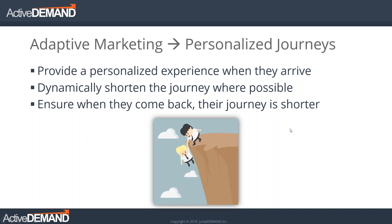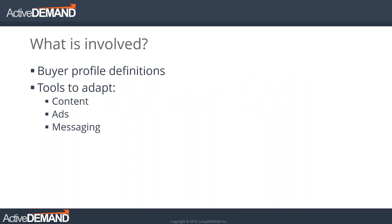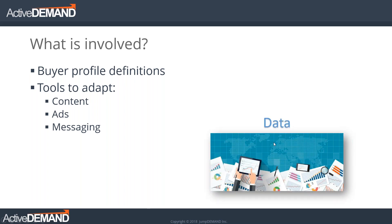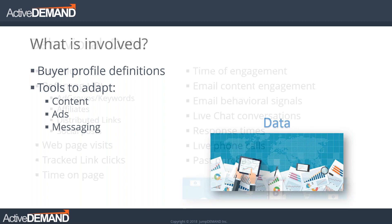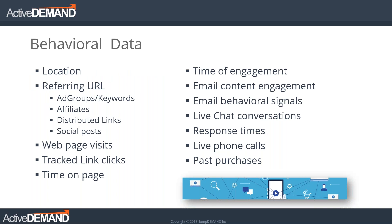For this we need well-defined buyer profiles — we have to be able to describe who the prospects are, what problems they're trying to solve. Then we need tools to adapt the content, our advertising and messaging. The most important data in this approach is behavioral data: where the prospect is in the journey, how they came to your website, how long they spent, what they're clicking, how long they engage with specific content, what they talk about on the phone or live chat, and what they've bought previously. It's inference-based, but it uses what the prospect actually does to move the journey forward.